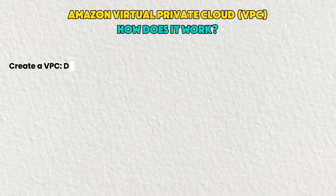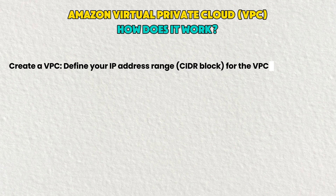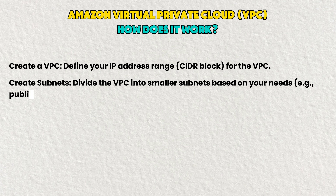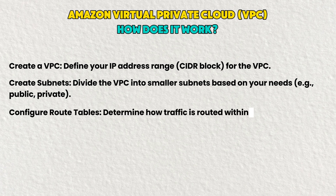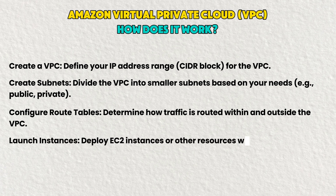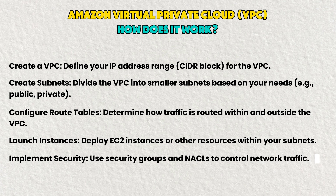Here's how VPC works step by step. Step 1: create the VPC by defining your IP address range using a CIDR block — let me know in the comments what CIDR stands for. Step 2: create subnets — divide your VPC into smaller subnets, either private or public. Step 3: create routing tables to determine how traffic is routed within and outside the VPC. Step 4: launch instances — deploy EC2 instances or other resources within your subnet. Step 5: implement security using security groups and NACLs to control network traffic.